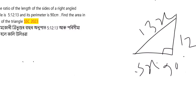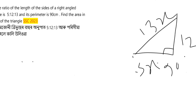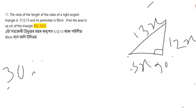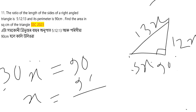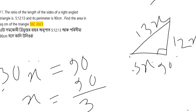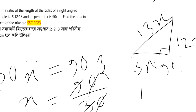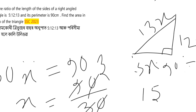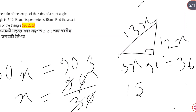The perimeter is 90 cm. We have sides 3x, 13x, 12x, and 5x. Adding them: 3x plus 5x plus 13x plus 12x equals 33x, and setting 33x equal to 90 gives us the value of x. The triangle's sides form the length of our triangle.